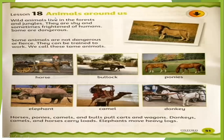Now we have lesson 18 — Animals Around Us. Wild animals live in the forests and jungles. They are shy and sometimes frightened of humans. Some are dangerous, like lion, cheetah, tiger, and bear — they are very wild and dangerous. Some, like giraffe, elephant, and panda, are shy and frightened of human beings. Some animals are not dangerous or fierce — they can be trained to work. We call these tame animals.